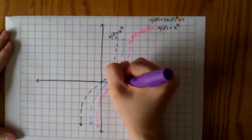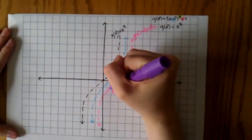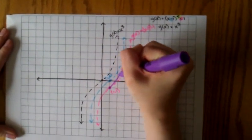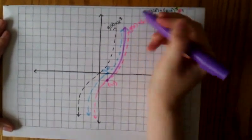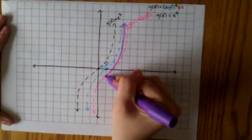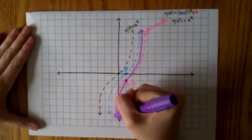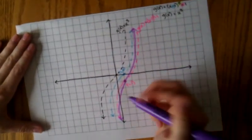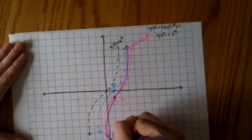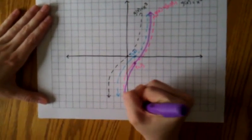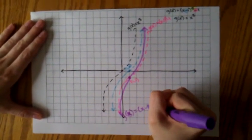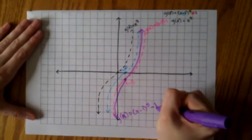We start off still at (1, -1), and we now move the graph in towards the y-axis. This would be the graph of g(x) = (x-1)^5 - 1.